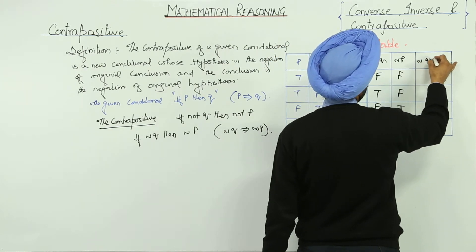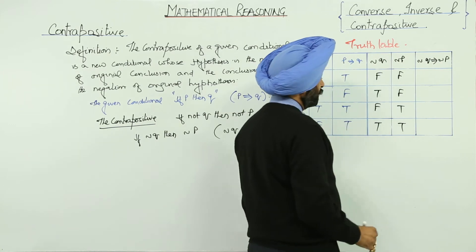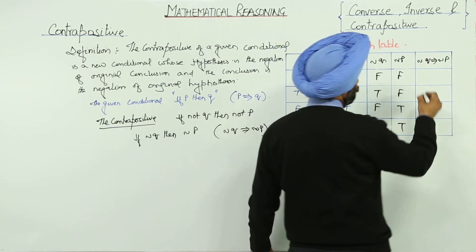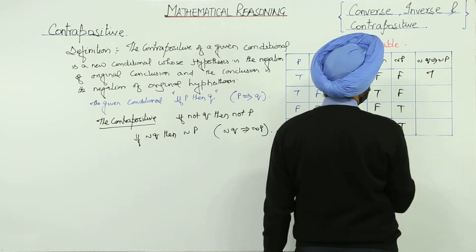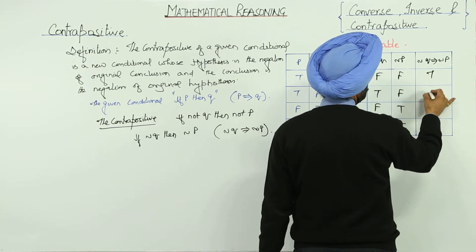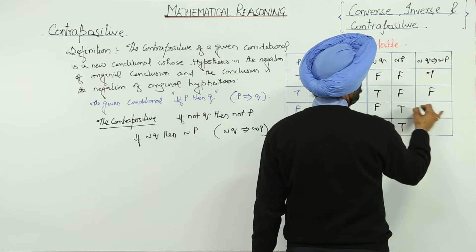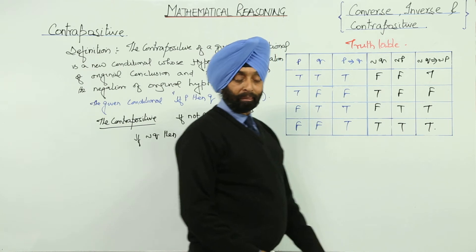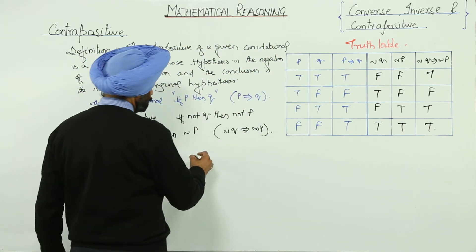Negation of Q implies negation of P. Now, we have to check it in between these two. False and false becomes true. True and false becomes false. False and true becomes true. True and true becomes true. Okay? Now, we can go for an example.